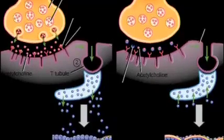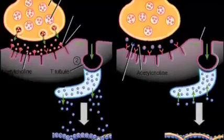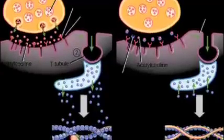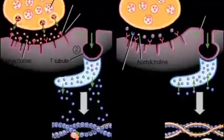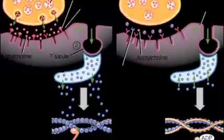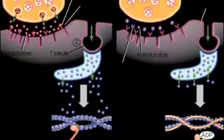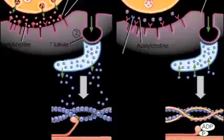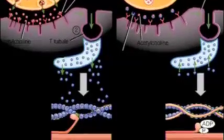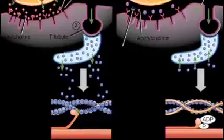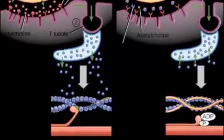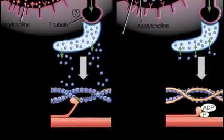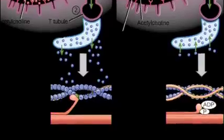An action potential arrives at the synaptic terminal. Acetylcholine is released. When an action potential traveling along the axon of a motor neuron reaches the synaptic terminal, vesicles in the synaptic terminal release acetylcholine into the synaptic cleft. ACH binds at the motor end plate. The ACH molecules diffuse across the synaptic cleft and bind to ACH receptors on the sarcolemma. This event changes the permeability of the membrane to sodium ions. The result is a sudden rush of sodium ions into the sarcoplasm, which produces an action potential in the sarcolemma.